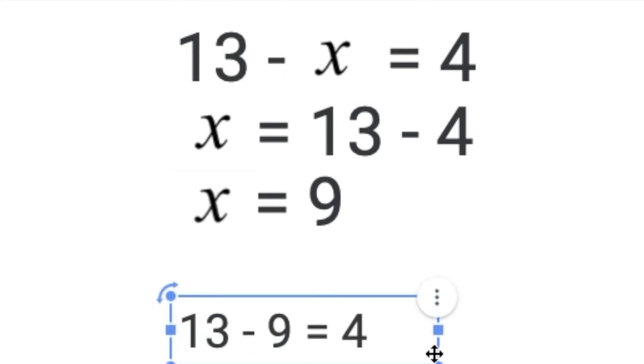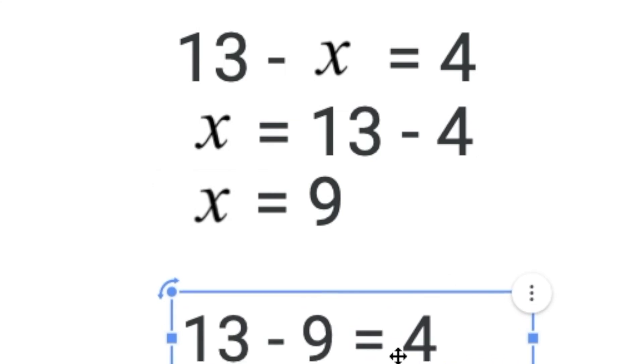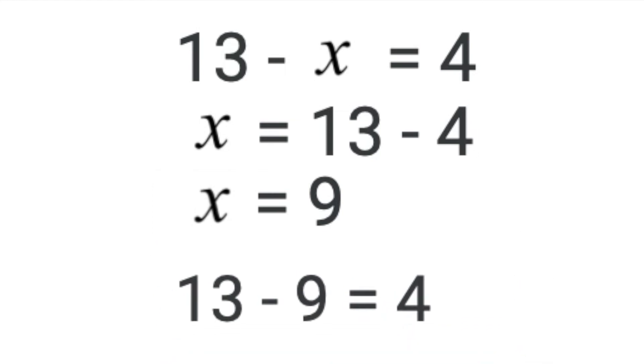And the way we can check this is we can actually just write out our answer for x in our original equation. So 13 subtract 9 equals 4. Yeah, that math checks out. And so we know that we have done this correctly.